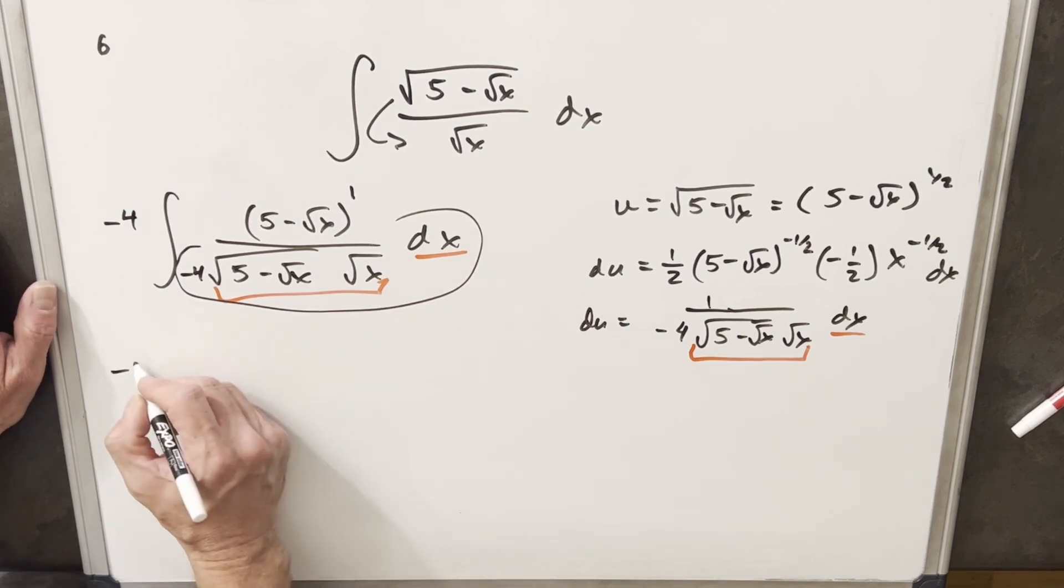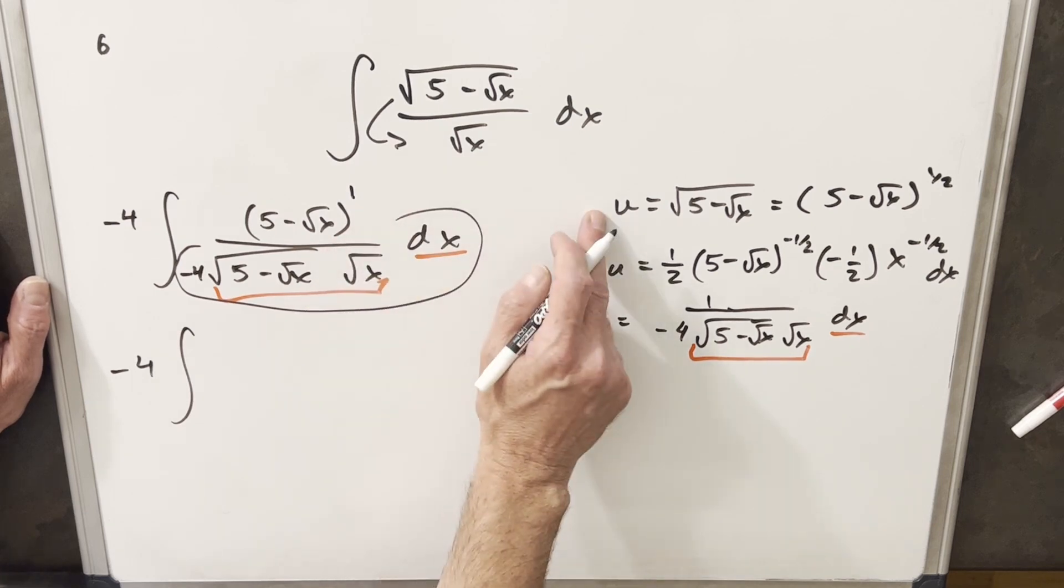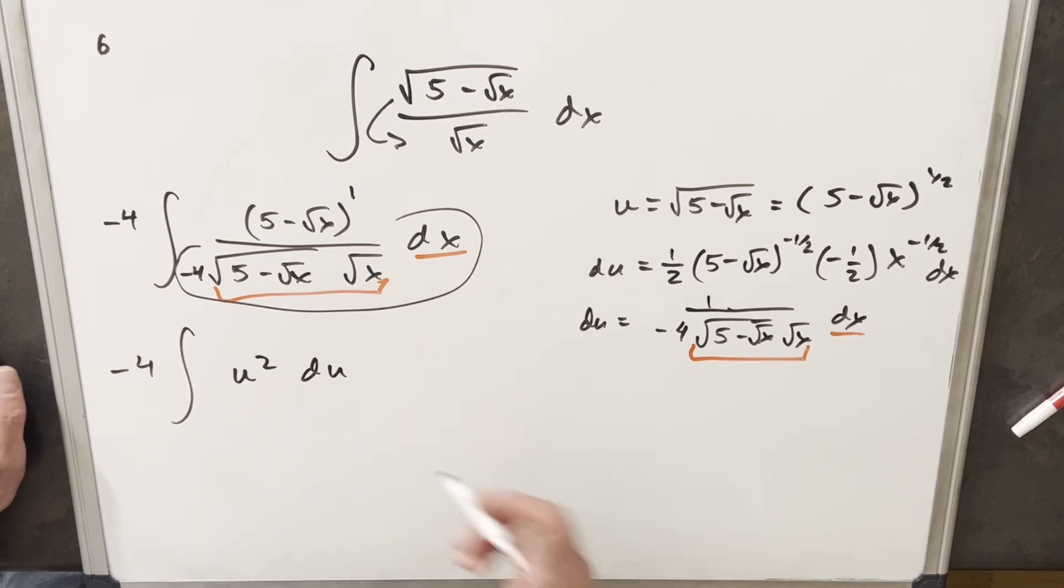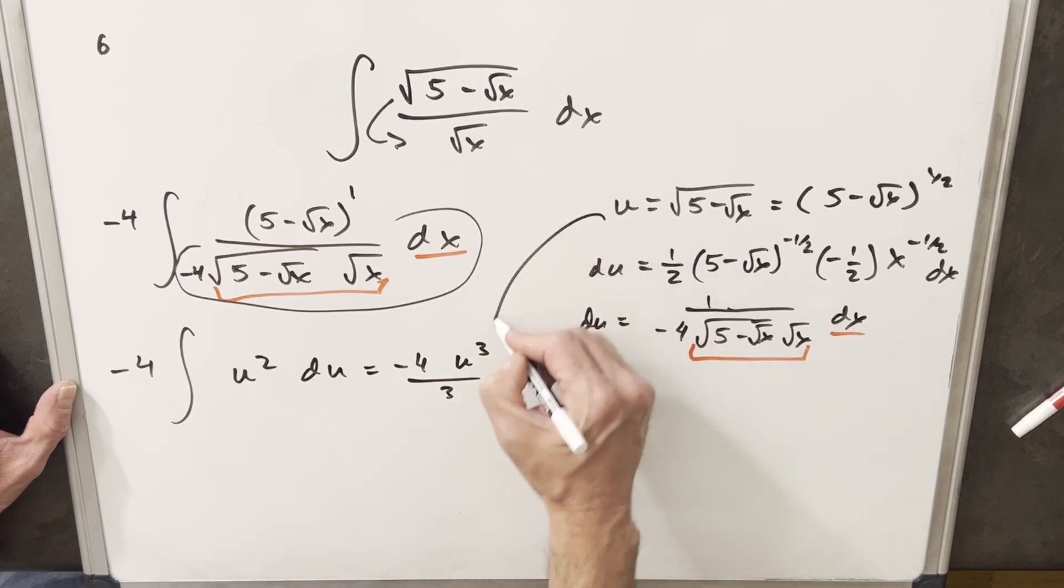So when I do the substitution, now we have minus four in front. And you'll notice our numerator is actually just going to be u squared. So we'll write that. But everything else is just du. But now that we have this, we're just doing power rule. So we'll have our minus four. This is going to be u cubed over three. And I'm just going to need to back substitute.